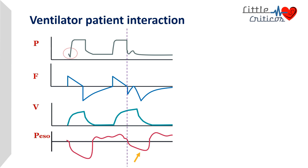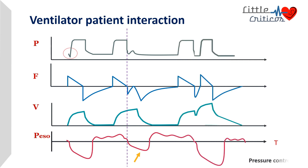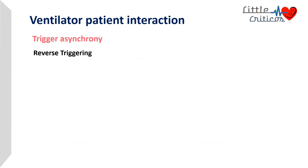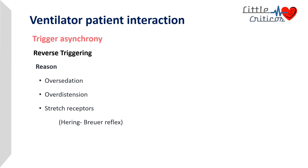It is important to note that the first breath is not patient-initiated but ventilator-triggered. In extreme cases, when the flow loop reaches beyond the baseline and triggers a breath, it can result in something similar to double triggering. This is an important point to differentiate from double triggering due to premature cycling. Possible reasons for reverse triggering include over-sedation and over-distension, where stretch receptors cause a Hering-Breuer reflex. Reducing sedation and initiating patient-triggered breaths may help reduce reverse triggering.